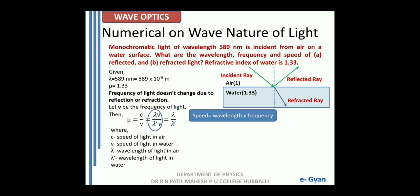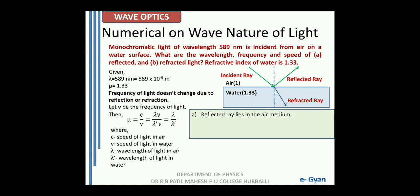We could write this because speed of wave is equal to the product of wavelength and frequency. Now since the reflected ray lies in the air medium, the wavelength is lambda equal to 589 into 10 raised to minus 9 meter. Speed of light in air is 3 into 10 raised to 8 meter per second. Frequency nu is equal to C divided by lambda, which gives 3 into 10 raised to 8 divided by 589 into 10 raised to minus 9, which is equal to 5.093 into 10 raised to 14 hertz.